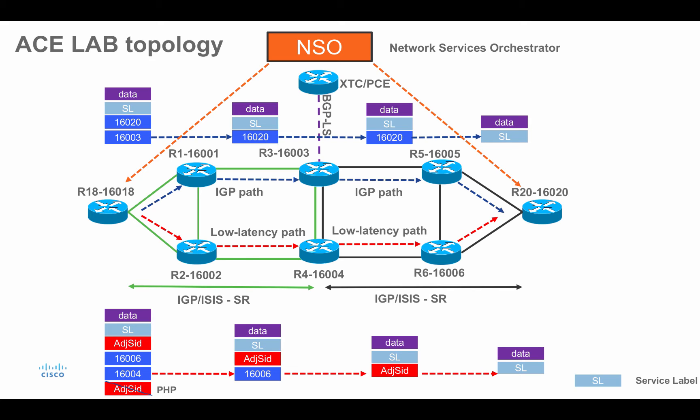As already mentioned, we will provision an L2VPN point-to-point service between router 18 and router 20 through Network Services Orchestrator. Once NSO provisions the service on both routers, router 18 will ask XTC to provide a path to reach router 20, and likewise router 20 will ask XTC to provide a path to reach router 18. In the first use case, both routers ask XTC for the shortest path based on IGP metrics — the blue path shown. We will use the Segment Routing traffic engineering infrastructure on both routers.